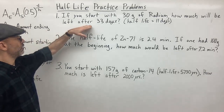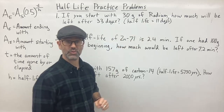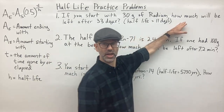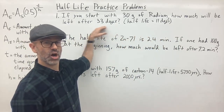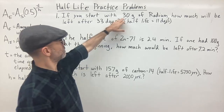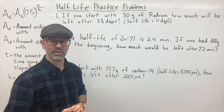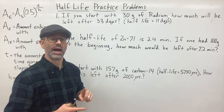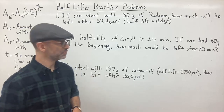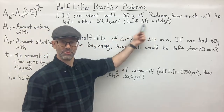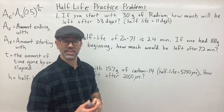Problem one: if you start with 30 grams of radium, how much will be left after 33 days? The elapsed time is 33 days and the starting amount is 30 grams. The first thing I need to figure out is how many half-lives the sample has gone through. They give us the half-life, which is 11 days. So how many half-lives is 33 days?